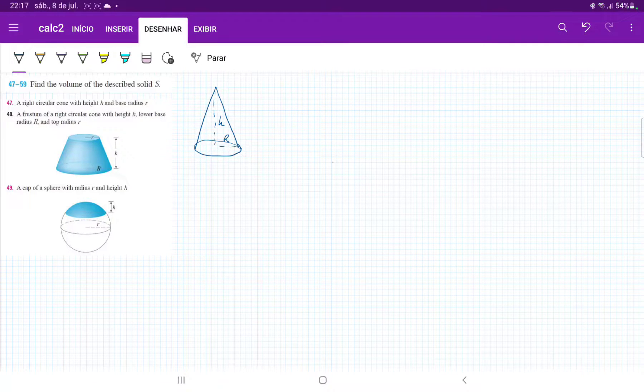So, for number 7, it wants us to find the volume of a right circular cone with length h and base radius r.